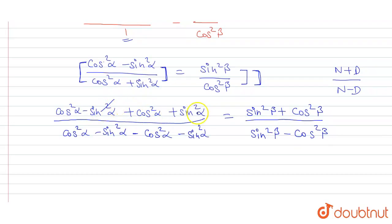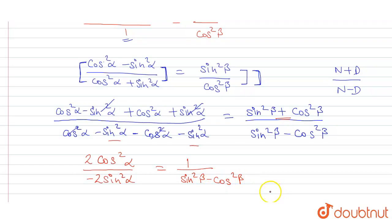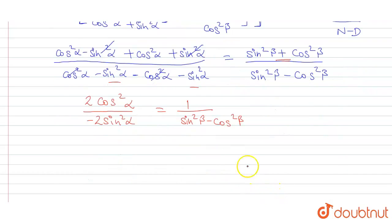Now sin squared alpha and sin squared alpha cancel, and cos squared alpha and cos squared alpha cancel, leaving us with 2 cos squared alpha upon 2 sin squared alpha, which equals sin squared beta plus cos squared beta — which is 1 — upon sin squared beta minus cos squared beta. The 2s cancel out, so we are left with cos squared alpha upon sin squared alpha.